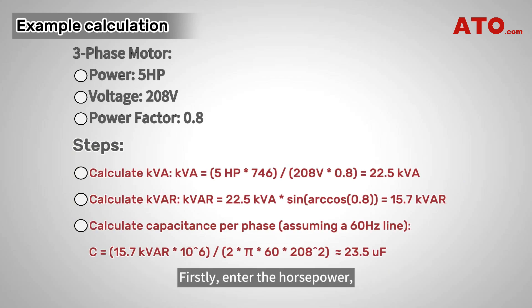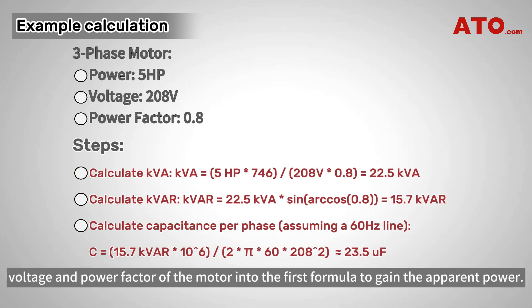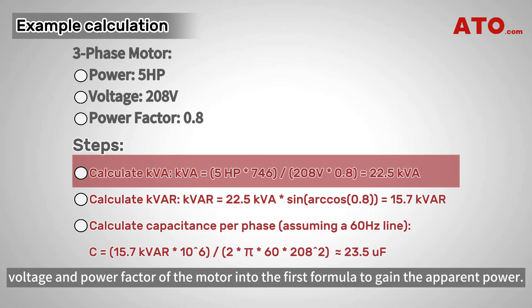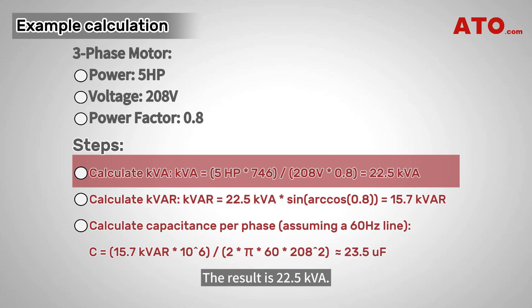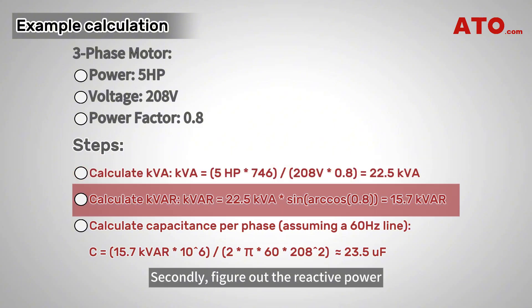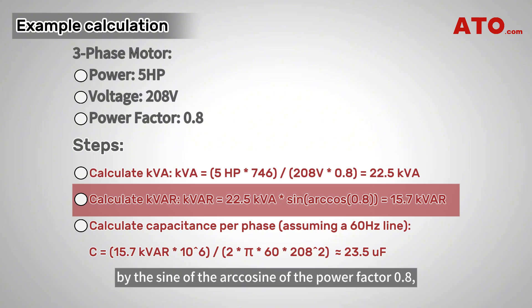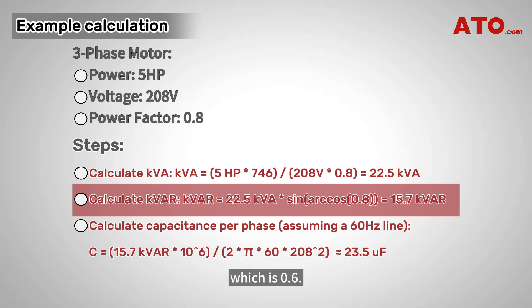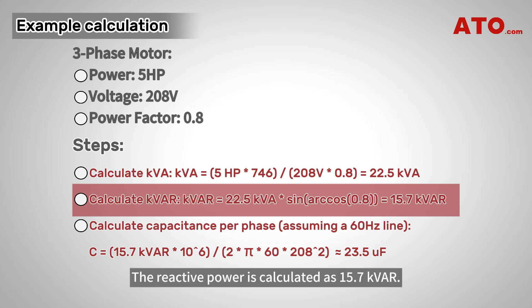Firstly, enter the horsepower, voltage, and power factor of the motor into the first formula to gain the apparent power. The result is 22.5 kVA. Secondly, figure out the reactive power by multiplying the calculated apparent power by the sine of the arc cosine of the power factor 0.8, which is 0.6. The reactive power is calculated as 15.7 kVAR.